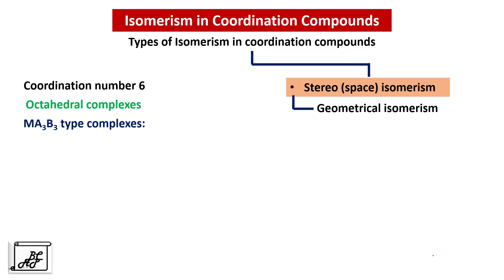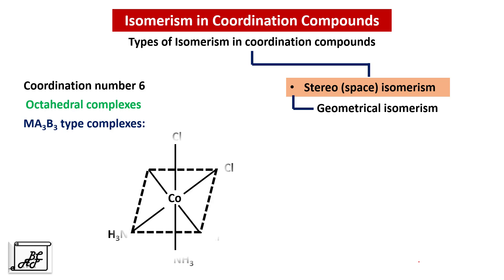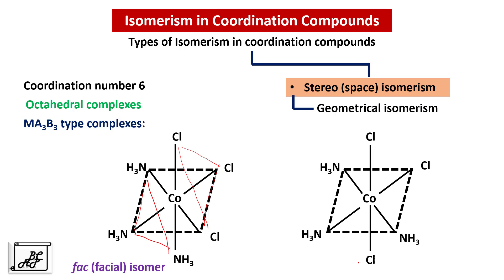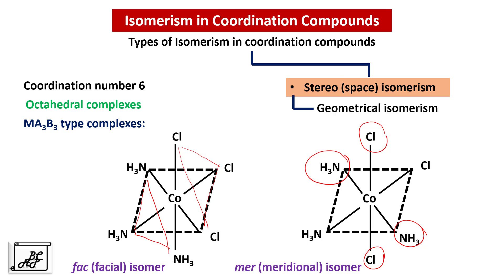The next type is MA3B3 type complexes, where three ligands are the same and three are different. For example, with cobalt as the central metal atom: when three chlorine atoms are on the same side and three ammonia molecules are on the same side, forming a triangular face on each side, this is called the facial isomer or fac isomer. The other isomer is called the meridional isomer, in which two chlorine atoms and two ammonia molecules are on the opposite side. Therefore, in MA3B3 type complexes there is no cis-trans isomerism — there is fac-mer isomerism, which is also a type of geometrical isomerism.